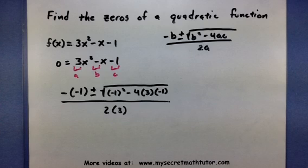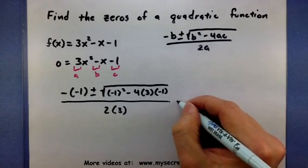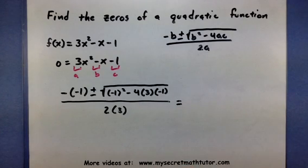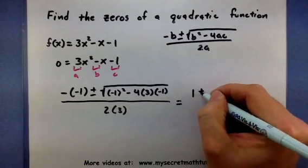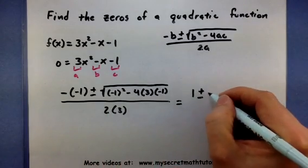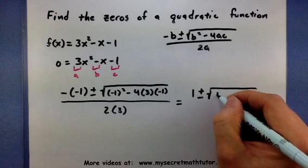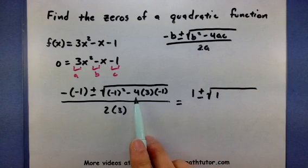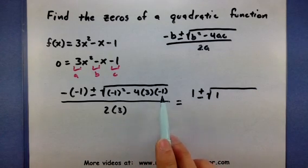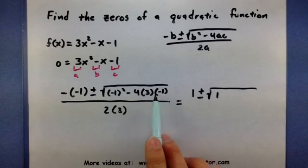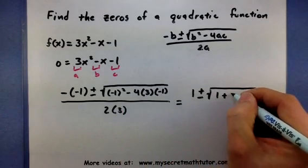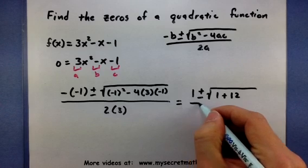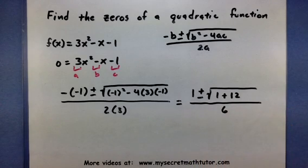Now that can be a lot of work just plugging things in. But you want to make sure that you simplify it very carefully. So if you see a couple of negative signs, that turns positive. Negative 1 squared is a positive 1. Let's see, now I have 4 times 3 times a negative 1, so this is a negative 12. So I'll be subtracting a negative 12, which is the same as adding 12. All over 6.